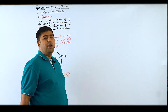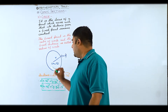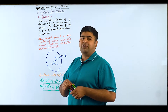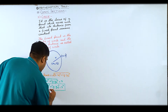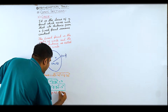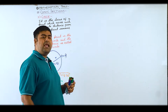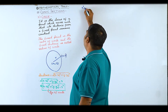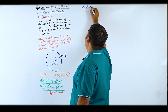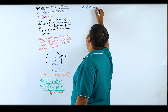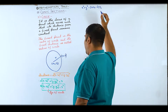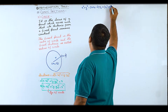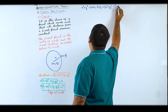This is the equation of the circle when the center and radius are given. If we expand this equation, what we get is: x² + y² - 2x·x₀ - 2y·y₀ + x₀² + y₀² - r² = 0.